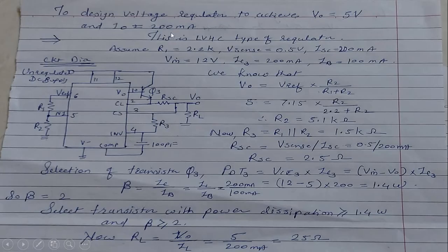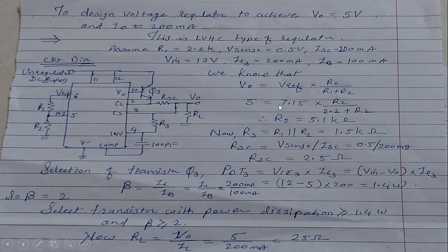The circuit for this low voltage, high current regulator requires adding an external transistor to enhance the current capability of the IC. We calculate R1, R2, R3, and RSC as before. Using Vout = Vref × R2 / (R1 + R2), with Vout = 5 V, Vref = 7.15 V, and assuming R1 = 2.2 kΩ: 5 = 7.15 × R2 / (2.2 + R2), giving R2 = 5.1 kΩ. R3 = R1 ∥ R2 = 1.5 kΩ.